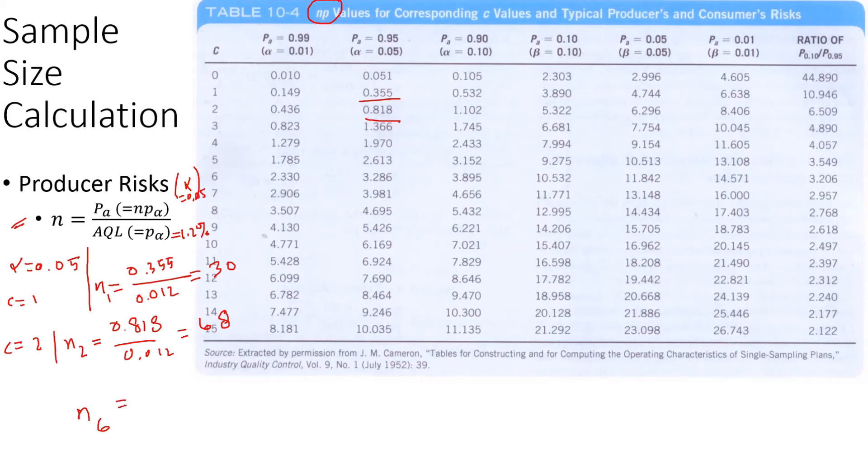And then we can also calculate similarly, for example, C value when we set equal to 6, what is the sample size? That's the value we'll be extracting from the table. So 3.286 divided by 0.012, that is equal to 274.